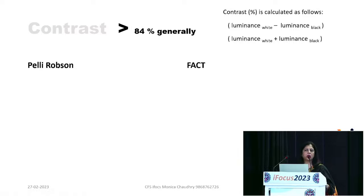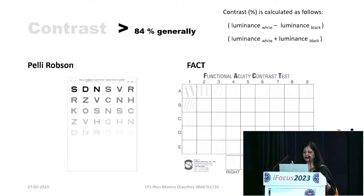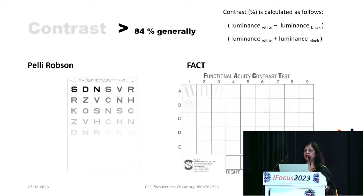The commonly used contrast sensitivity charts include the Pelly Robson chart. The FACT chart (Functional Acuity Contrast Test) is mostly for research. On the Pelly Robson chart, letters are presented in triplets with decreasing contrast. The patient reads down until they can no longer distinguish the letters, and the stopping point is the contrast acuity. Contrast sensitivity should always be measured alongside Snellen acuity, as reduced contrast can indicate pathology even before other signs appear.